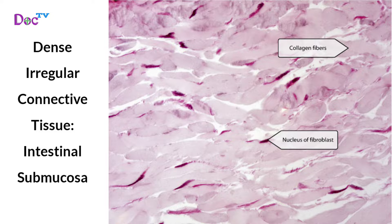Dense irregular connective tissue, found in the intestinal submucosa, has a matrix with collagen and elastic fibers, little ground substance and few cells, most of which are fibroblasts. Its thick bundles of collagen fibers run in multiple planes, which allows the reticular dermis, digestive tract submucosa, organs and joint capsules to withstand multidirectional tension.